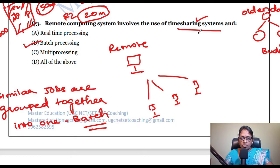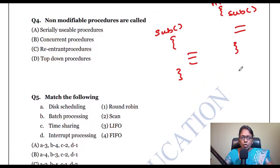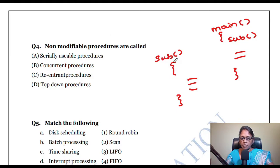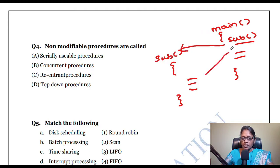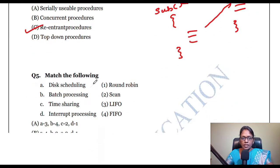Remote computing system involves the use of time sharing systems and batch processing. Next question: non-modifiable procedures are called re-entrant procedures. When a sub-program is called from the main function, it executes and then re-enters the main function without any issues. That is why non-modifiable procedures are also called re-entrant procedures.